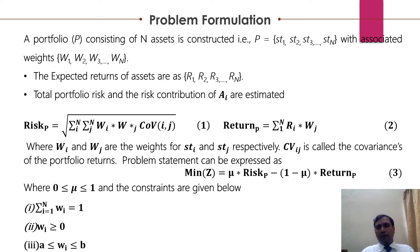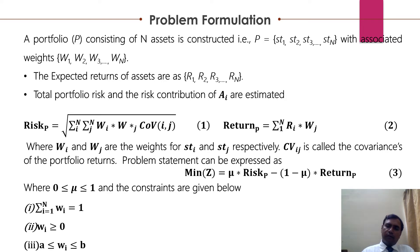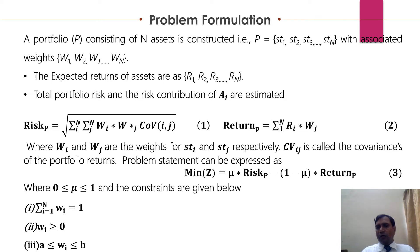A portfolio can be defined as a combination of various stocks or securities. During problem formulation, the researcher constructed a portfolio consisting of a number of assets where stocks ST1, ST2, and ST3 are associated with different proportions W1, W2, and WN. The expected returns of assets from various stocks are given by R1, R2, R3, and so on. The total portfolio risk and risk contribution can be estimated using equations 1 and 2, where Wi and Wj are weights of stocks i and j respectively, and covariance is used for portfolio returns. The problem statement can be minimized and expressed with equation 3.